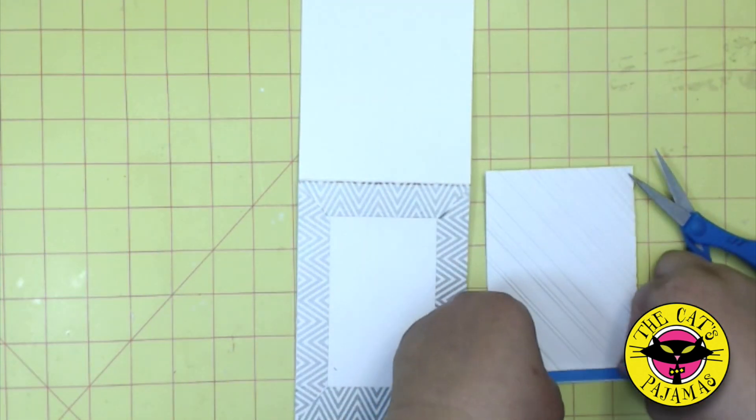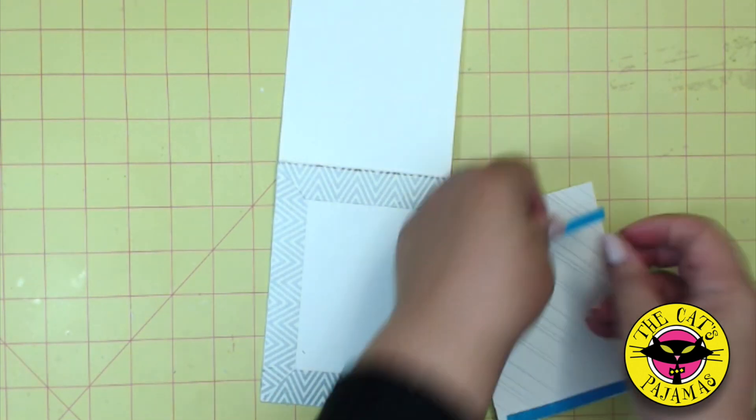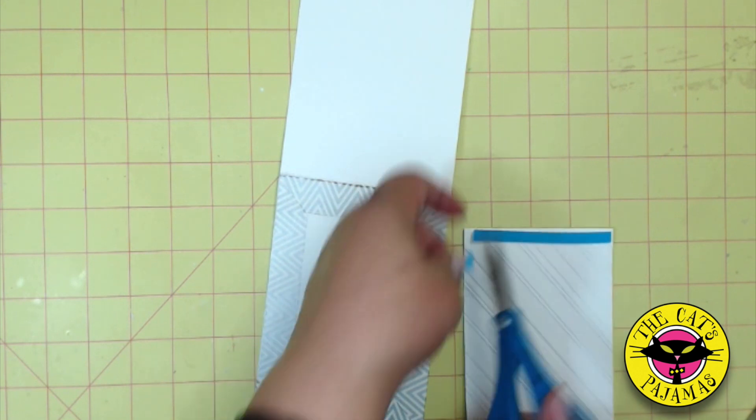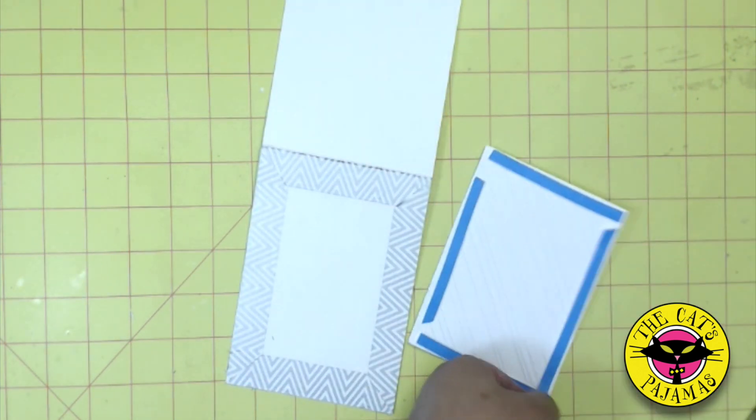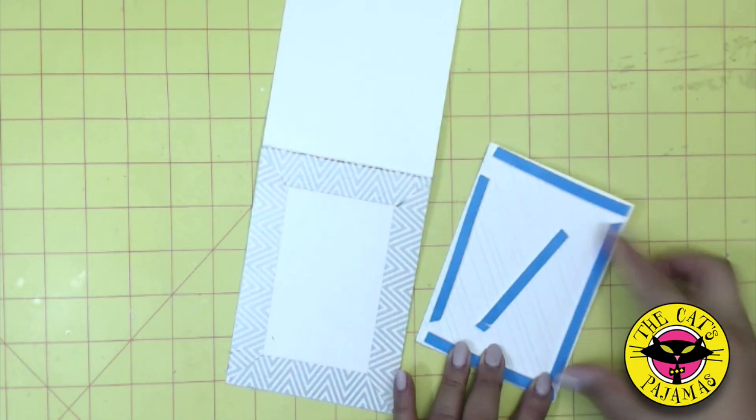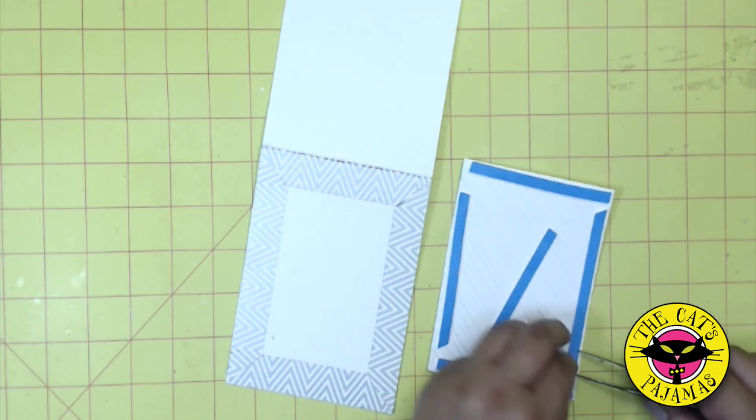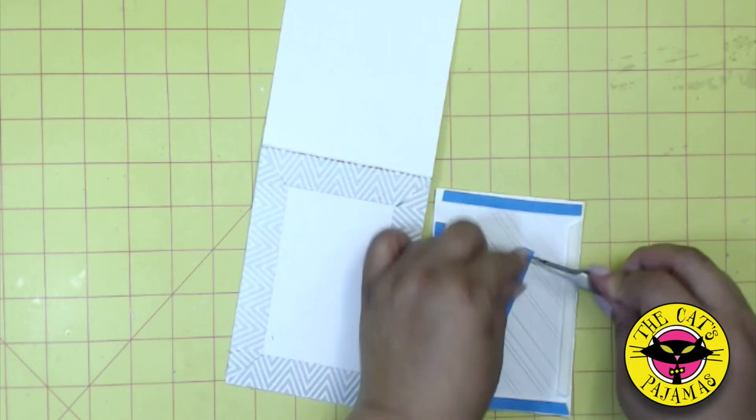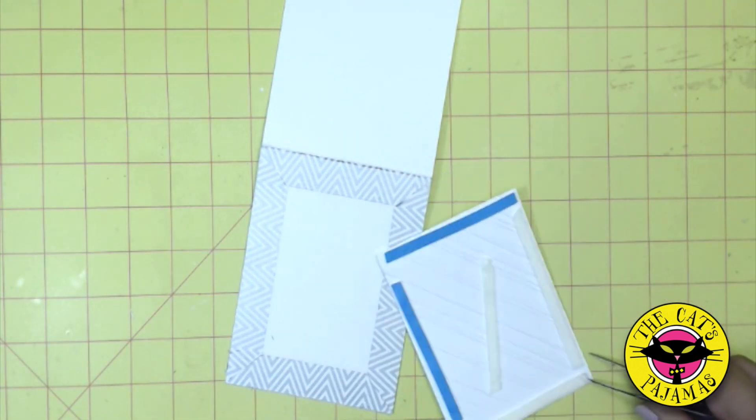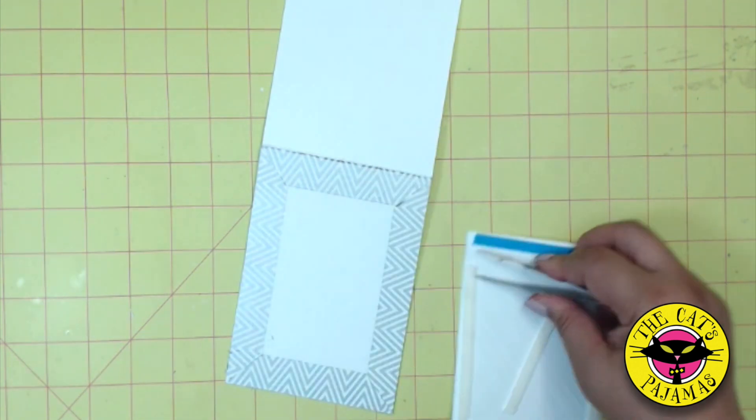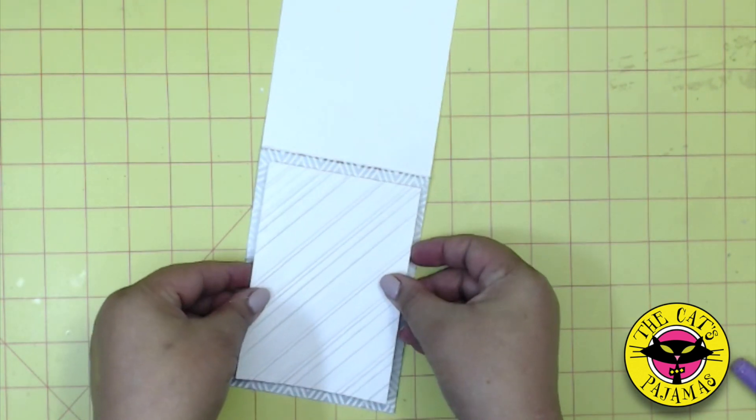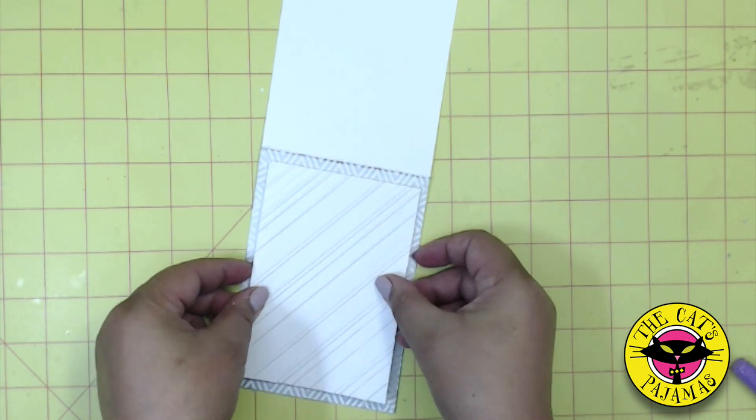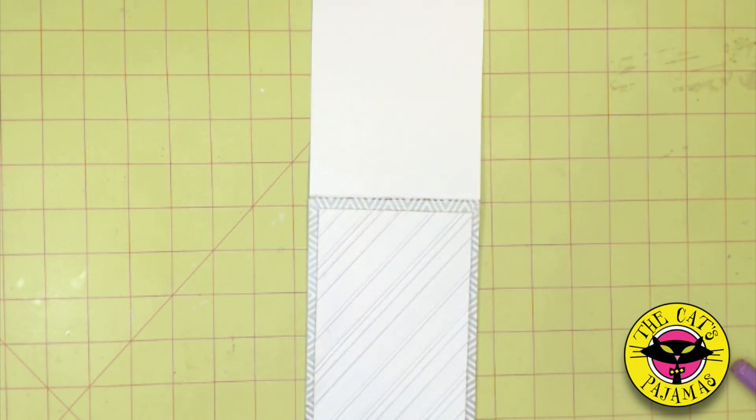Now some foam tape for the back of the embossed panel. This foam tape makes everything look a little bit more special. Some in the middle. Center it as best as I can on top of the washi tape.